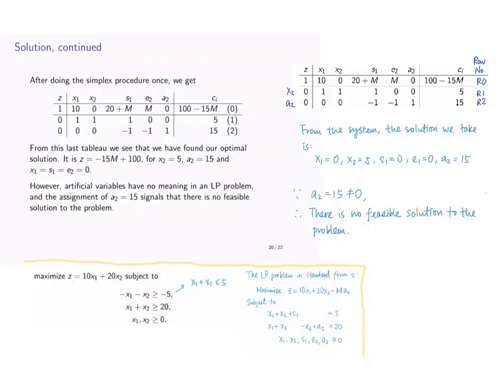But we observe that we are taking the artificial variable a2 to be 15 instead of 0. This is an indication that there is no feasible solution to this problem.